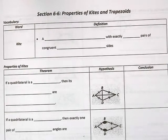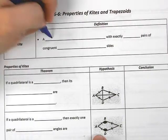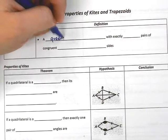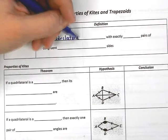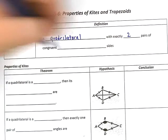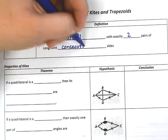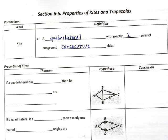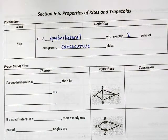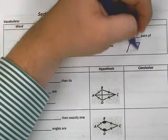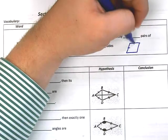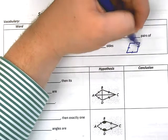So let's jump into it. A kite is a quadrilateral with exactly two pairs of congruent consecutive sides. Alright, exactly two pairs. That's a little bit different than a rhombus, right? If you have a rhombus, you know, this is congruent to this, and then this, and this. So you actually have four pairs.